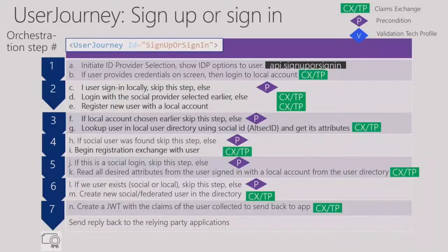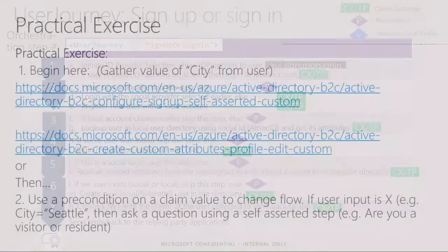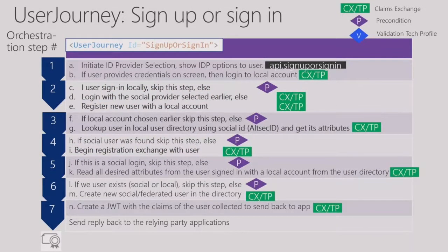This is the same user journey summarized — in the local account, sign-up or sign-in with local account and social IDP. All these steps have preconditions. We will skip one or the other depending on different conditions and claim values and whether the claim exists or not.